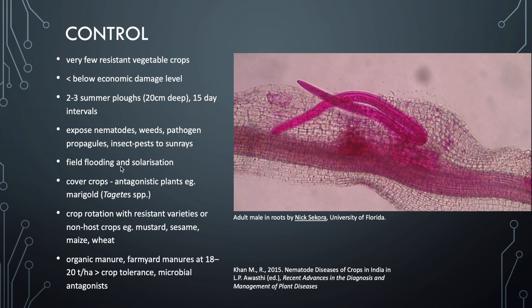Another detrimental method is field flooding and solarization — two extremes. Flooding creates anaerobic conditions which will kill the nematodes initially, but anaerobic soils actually increase nematode occurrence in the longer term, so the conditions created by this method further support reproduction and proliferation of nematodes. Solarization requires a lot of plastic, creating plastic waste, is expensive, and causes destruction of all soil life present, not just the nematodes.